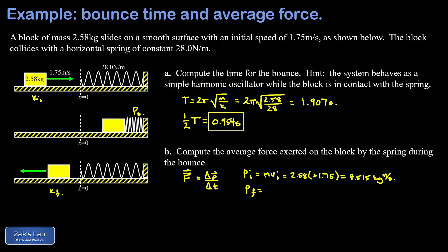So when we compute our final momentum mv_final, I plug in the mass 2.58 and then based on that energy conservation argument I know the speed is the same as the initial speed, but I'm going to put a minus sign on that to indicate that the velocity points to the left. This gives me negative 4.515 kilogram meters per second.